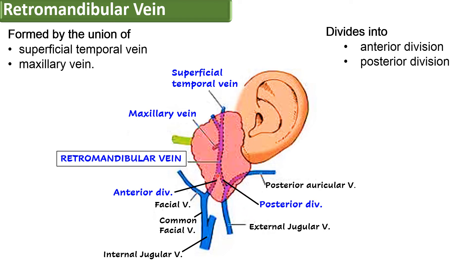The anterior division of the retromandibular vein joins the facial vein to form the common facial vein, which is a tributary of the internal jugular vein. The posterior division is joined by the posterior auricular vein — posterior and auricular being more posteriorly placed — and together they form the external jugular vein. This creates the typical W shape that can be seen here.